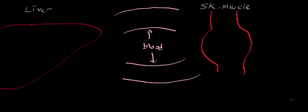There's a constant tug of war between muscle protein synthesis and muscle protein degradation — it's a very dynamic thing. If muscle synthesis exceeds degradation, that would be hypertrophy, and if degradation exceeds synthesis, that would be atrophy. So it's a constant tug of war.